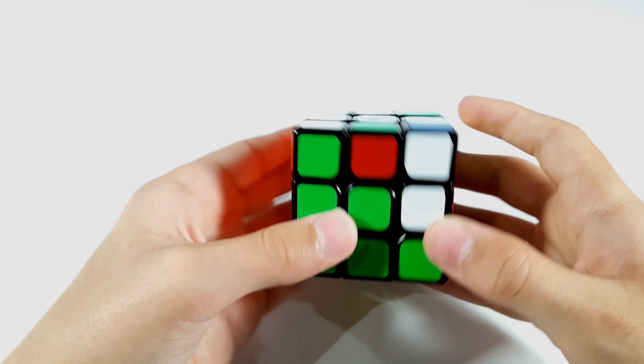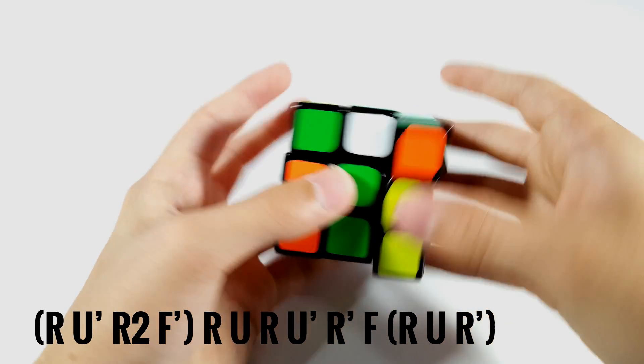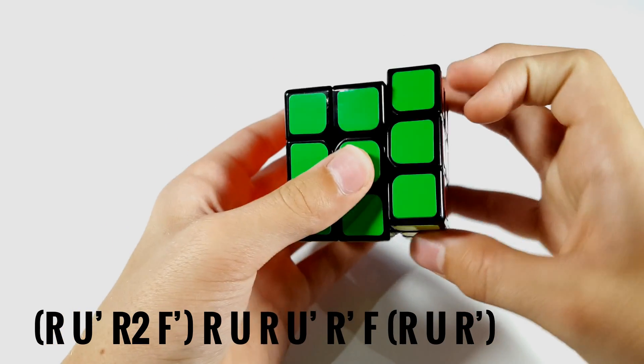Then you just hold it like so and do this algorithm. R U prime R2 F prime, R U R U prime R prime F, R U R prime. So basically,